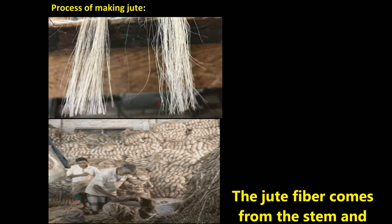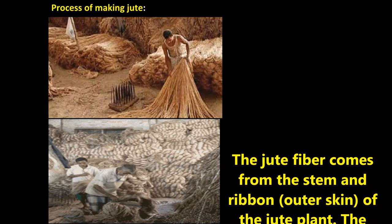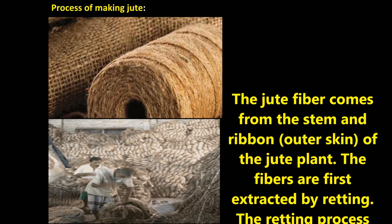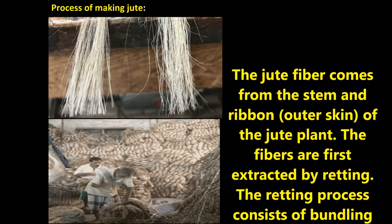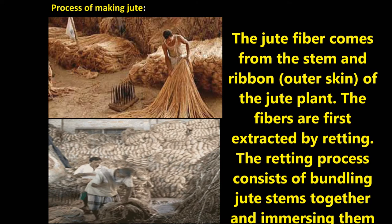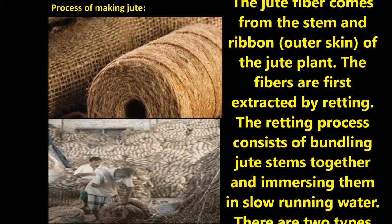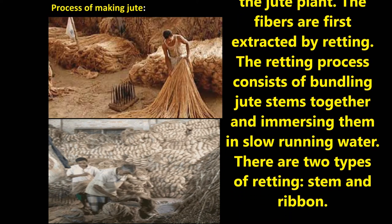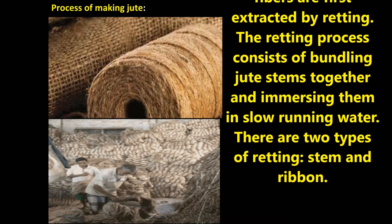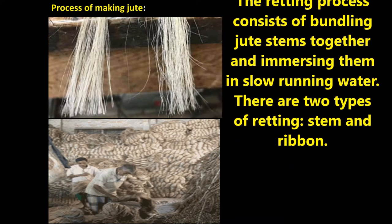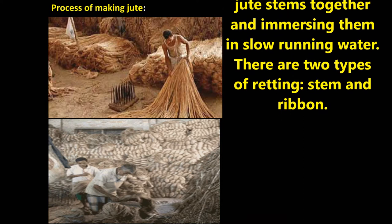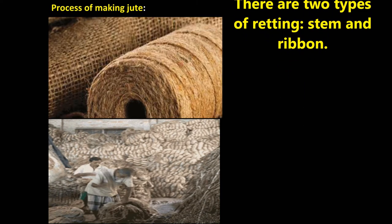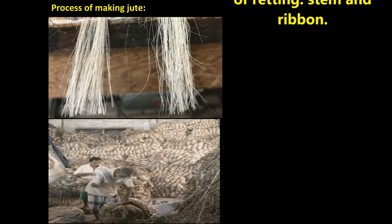The processes involved in making jute include batching, carding, drawing, spinning, and winding. These are the main processes to manufacture jute yarn. Two types of yarn are produced from jute spinning: sacking yarn and hessian yarn. The jute fiber comes from the stem and ribbon, meaning the outer skin of the jute plant. The fibers are first extracted by retting — a process that involves bundling jute stems together and immersing them in slow-running water.